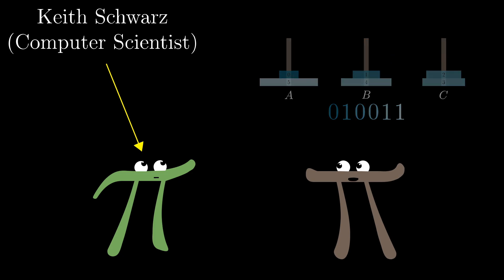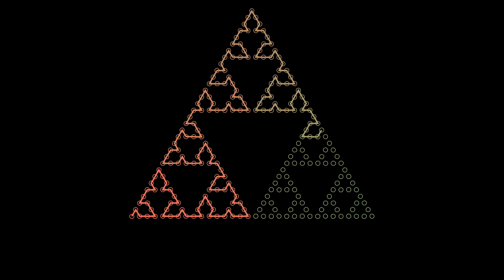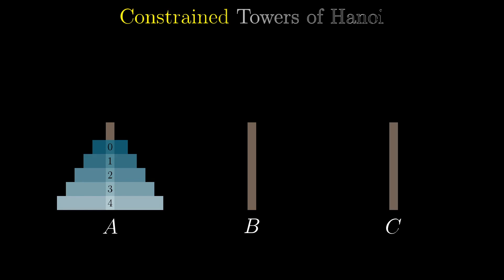Here, in this video, I want to describe a constrained variant of that puzzle and how it relates to finding a curve that fills Sierpinski's triangle. The problem variant is that you can think of these disks as in a line. You're only allowed to move a disk from one spindle to an adjacent one.